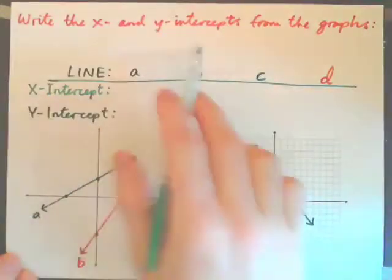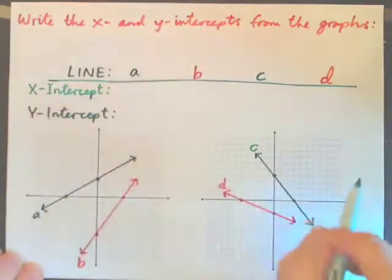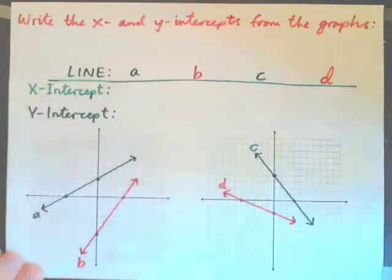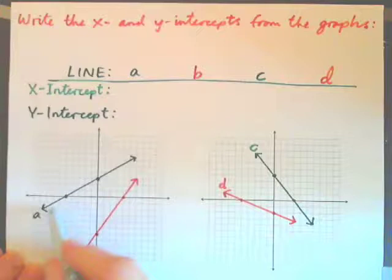Okay, let's just look at identifying and writing the x and y intercepts from the graphs. So I'm just going to do these four lines. And let's start with line A.